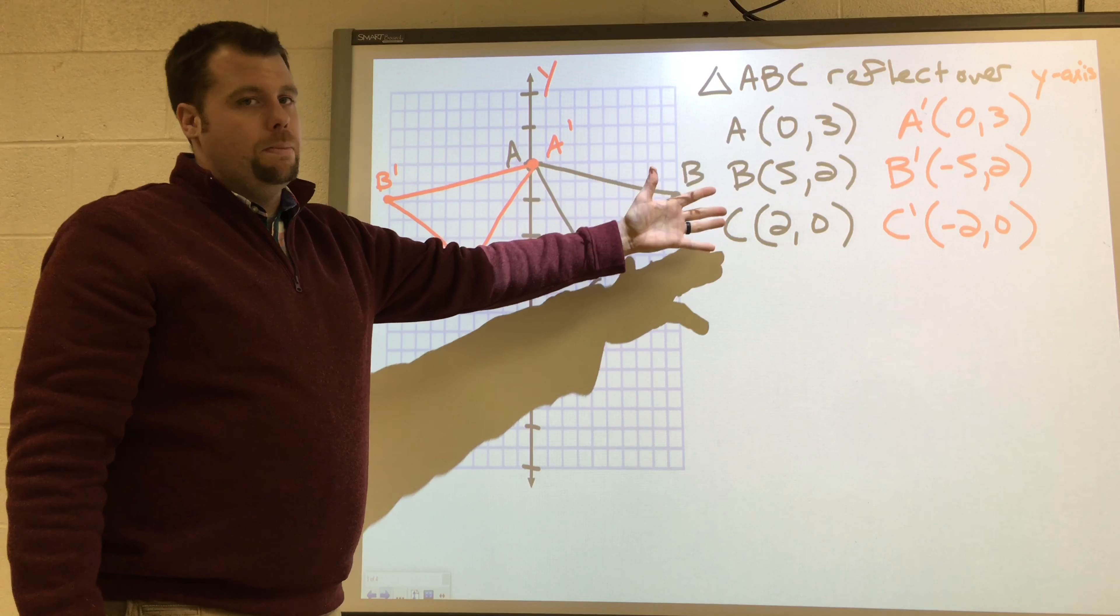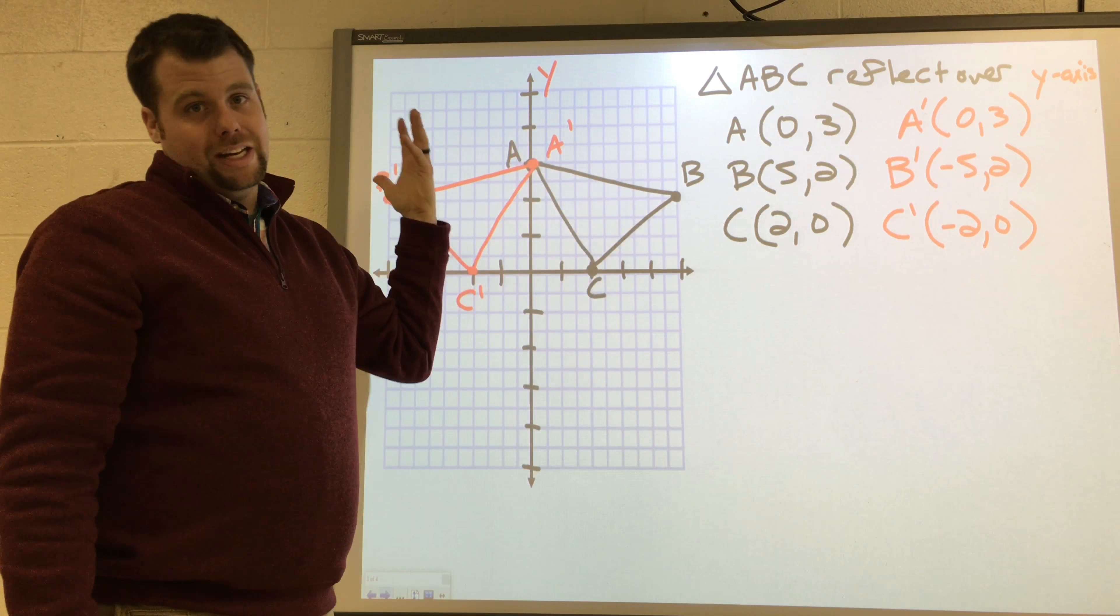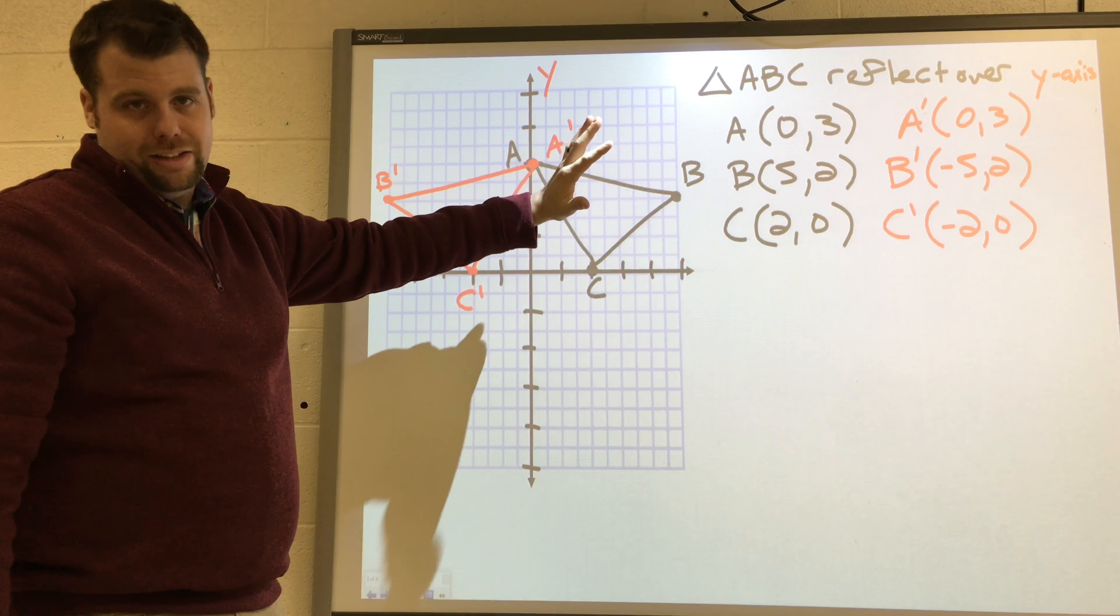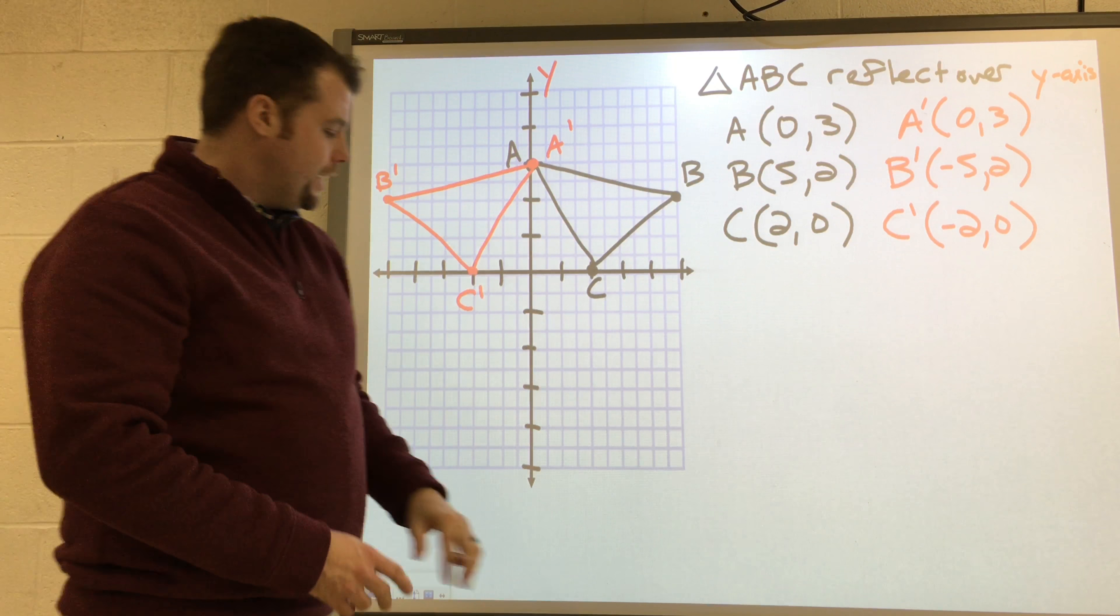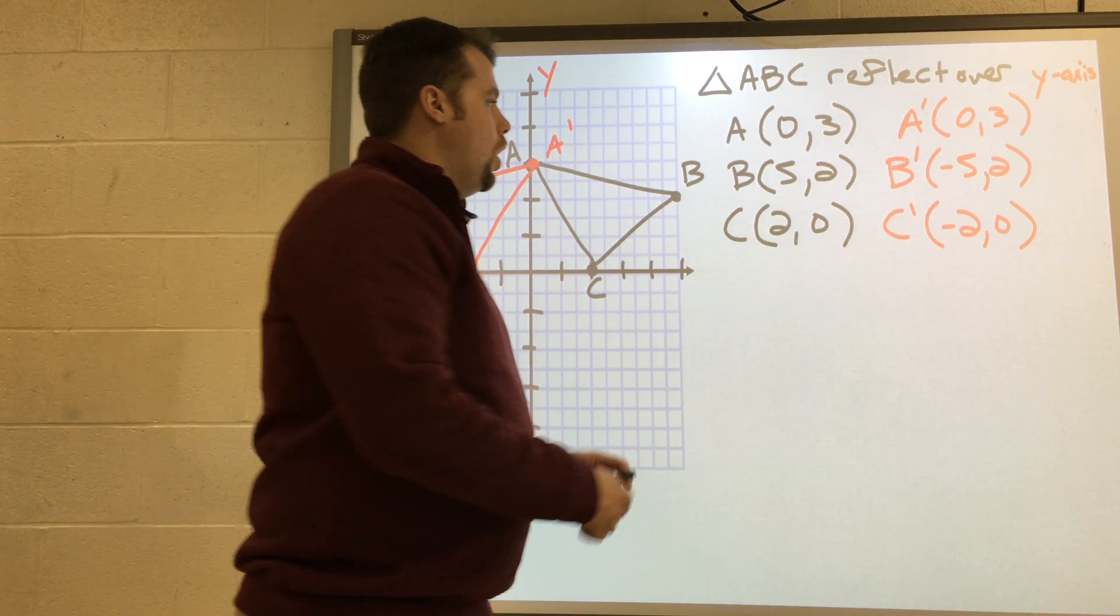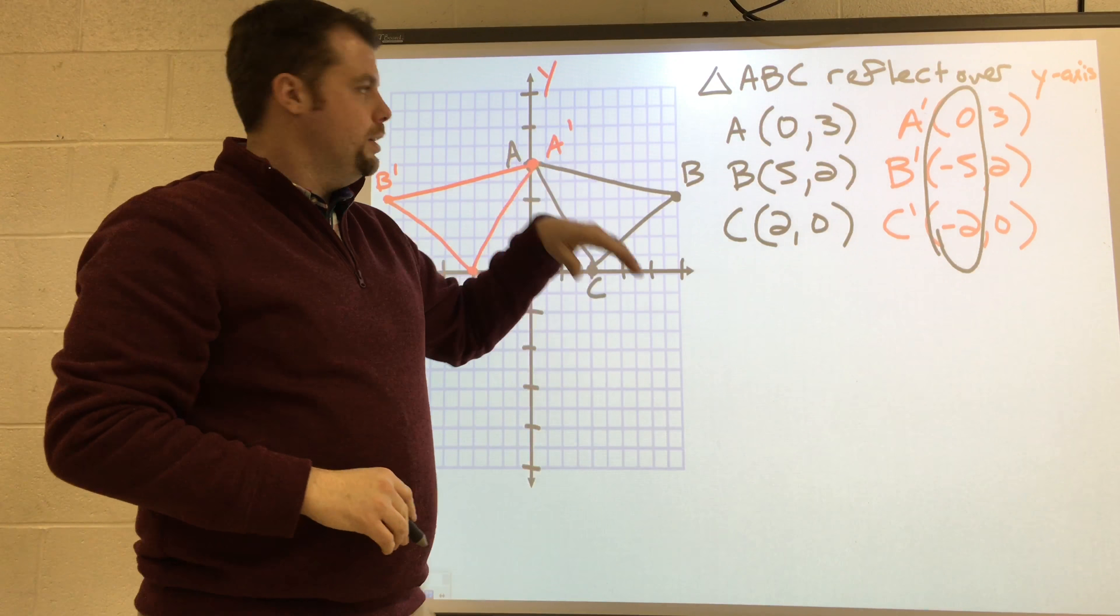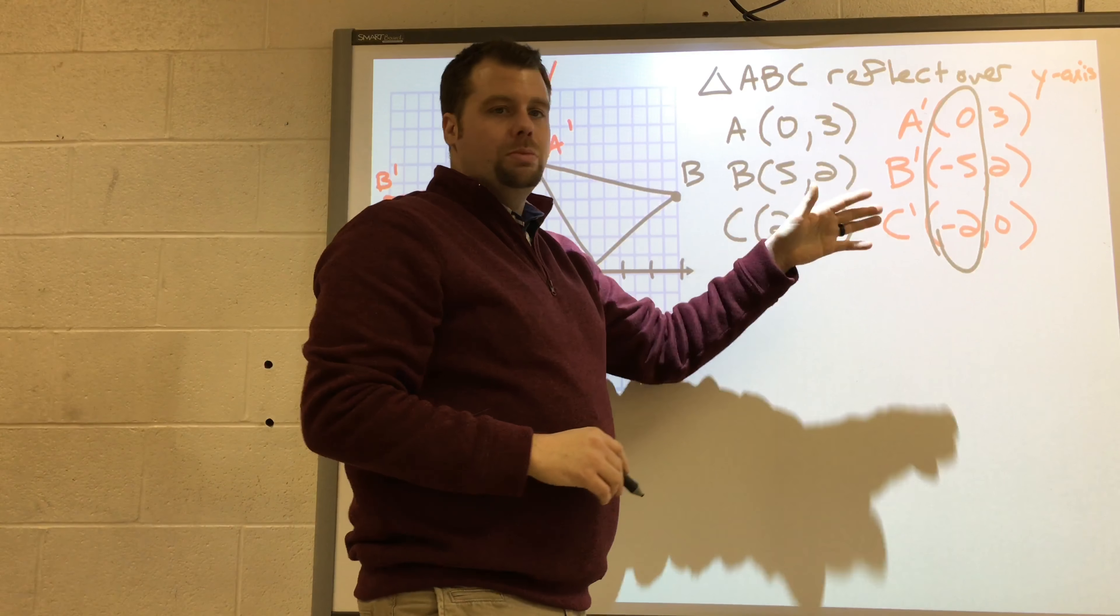In my example, they were all positive or on the line, and they moved to the negative region. But if they were on this side, they would be reflected to the other side. Now, take note of this. All of your x-values changed signs. Well, zero stayed at zero. Five became negative. Two became negative.